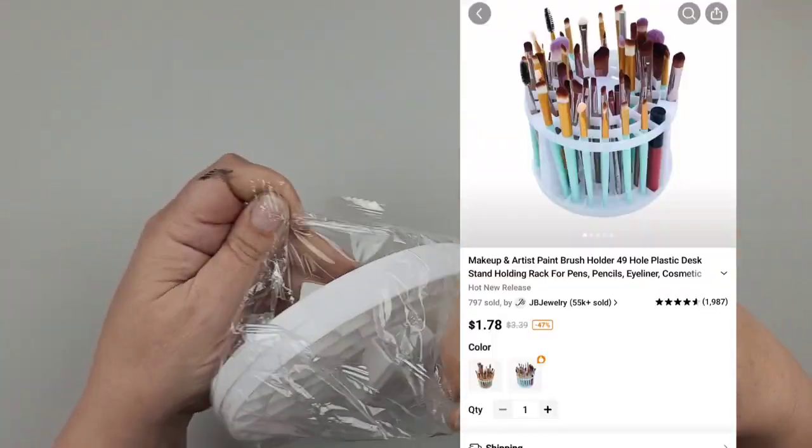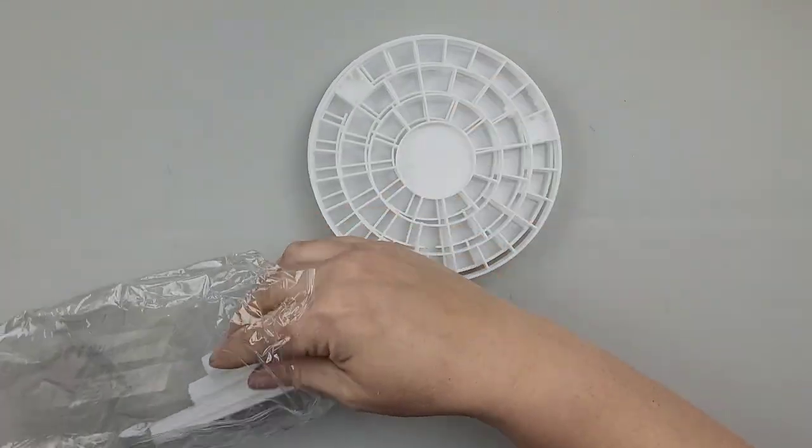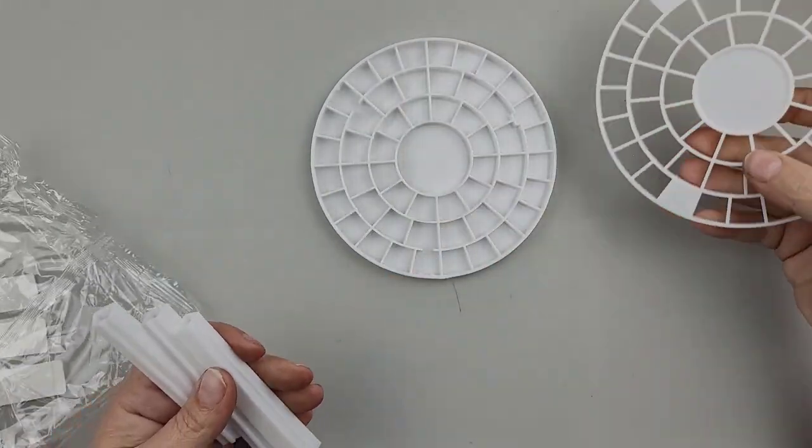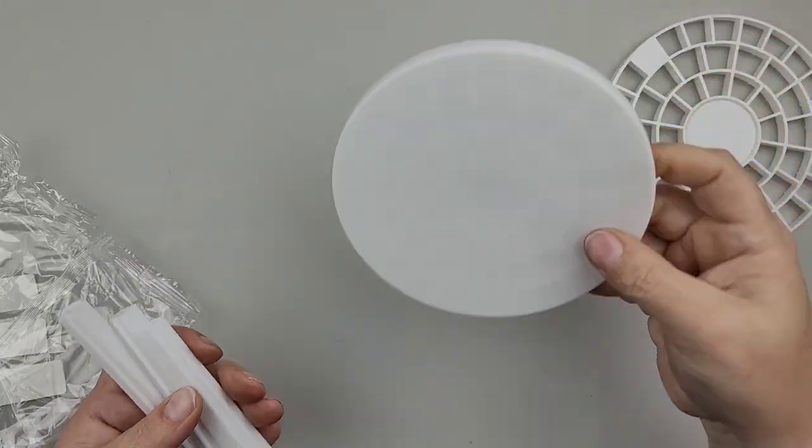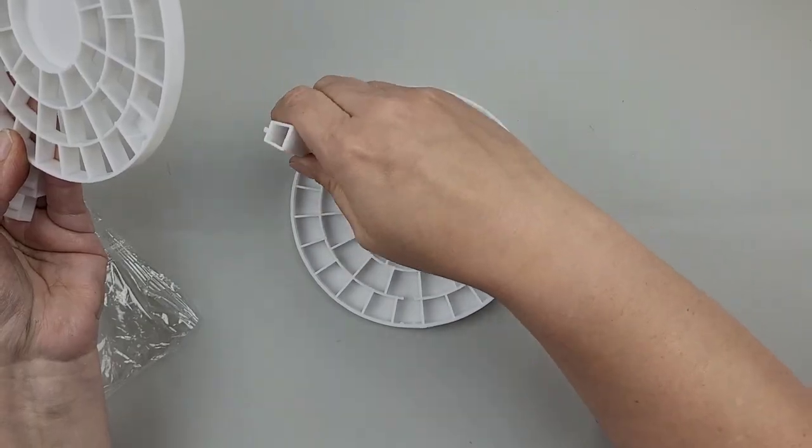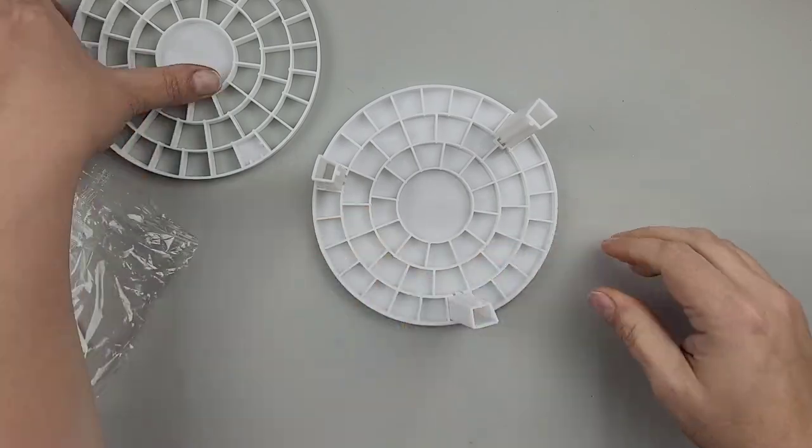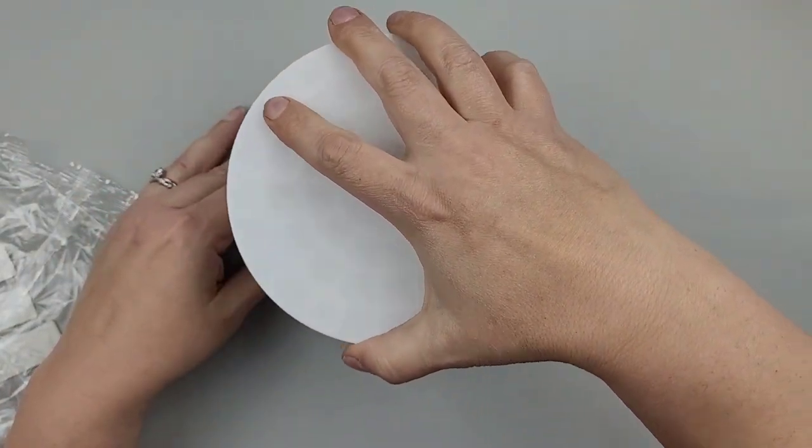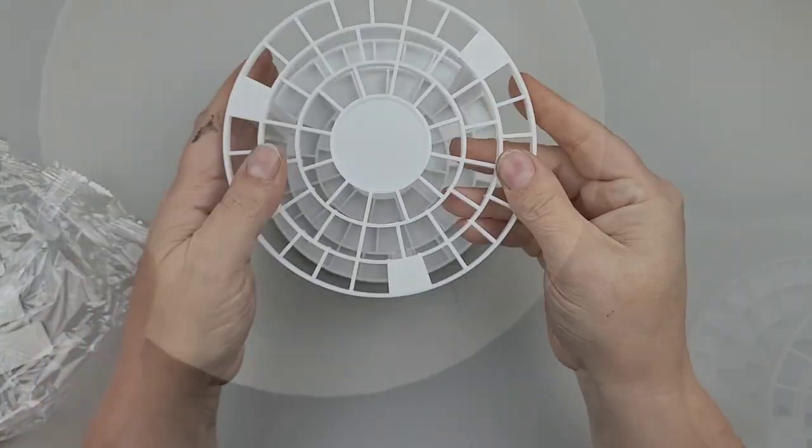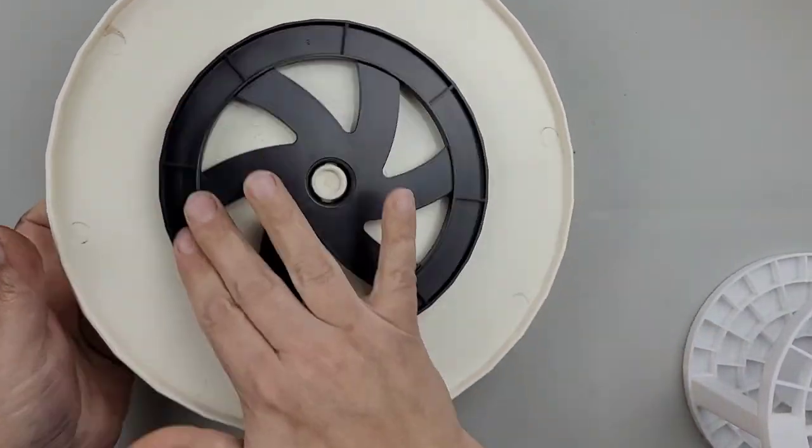Next, I picked out this makeup organizer, but I want to use it for paint brushes and markers, things like that. So it came in a little bag. You got to put it together, but it was super easy to put together and it is nice, sturdy plastic. So I think pulling my pens and paint brushes in and out is going to be great.